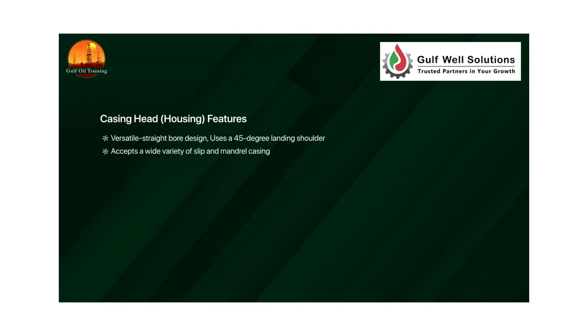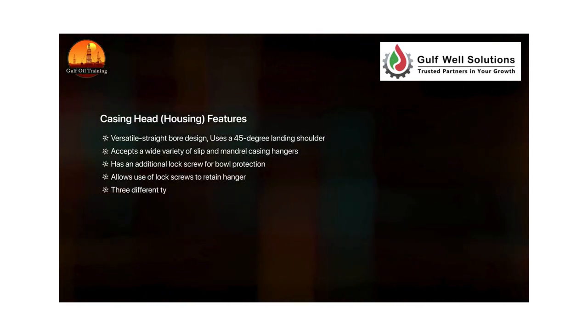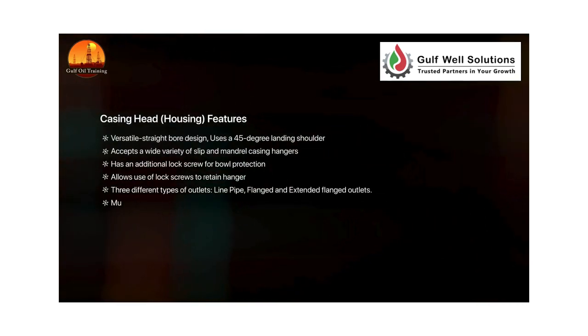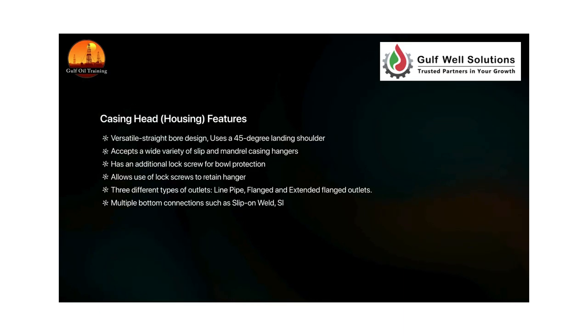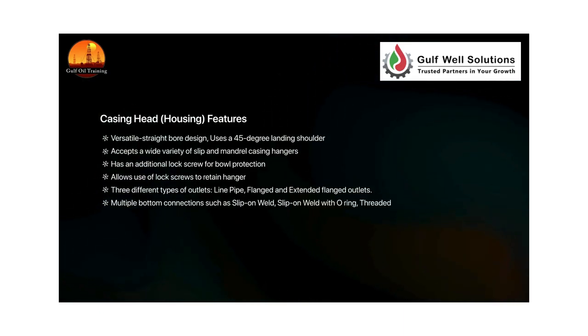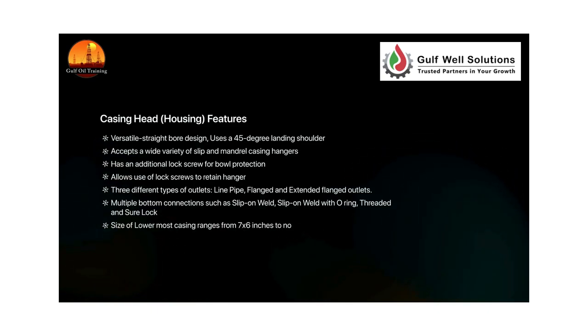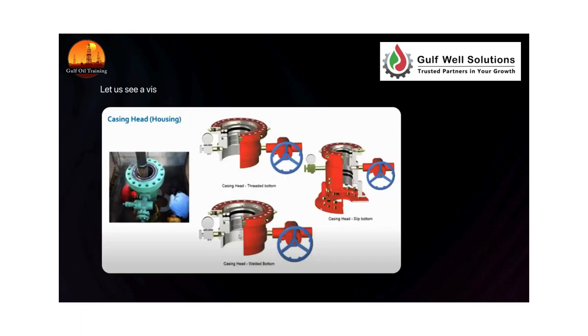Casing head housing features include a versatile straight-bore design, uses a 45-degree landing shoulder, accepts a wide variety of slip and mandrel casing hangers, has an additional lock screw for bowl protection, allows use of lock screws to retain hanger, and offers three different types of outlets: line pipe, flanged, and extended flanged. It also supports multiple bottom connections such as slip-on weld, slip-on weld with O-ring, threaded, and shorelock. The size of the lowermost casing ranges from 7 by 6 inches to nominal 21 inches, to support casing in sizes from 4½ inch to 16 inch.